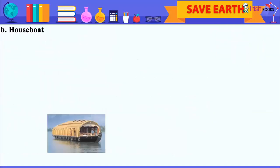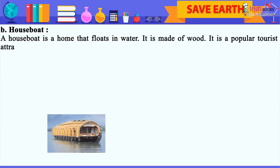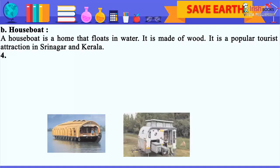B. Houseboat: A houseboat is a home that floats in water. It is made of wood. It is a popular tourist attraction in Srinagar and Kerala.